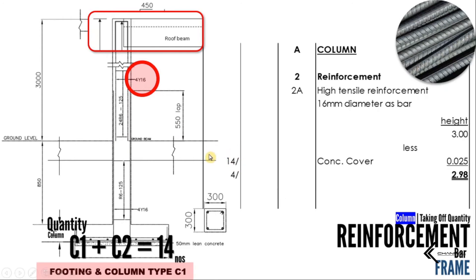Teruskan dengan pengiraan: 14 — jumlah kolam C1 + C2 — darabkan dengan 4, sebab dalam 1 batang kolam ada 4 batang besi Y16, dan panjang 1 batang besi adalah 2.98 meter. Daripada 14 × 4 × 2.98 meter, kita akan dapat 166.6 meter keseluruhan besi saiz Y16 bagi C1 dan juga C2. Selesai untuk high yield steel sebagai main reinforcement bar.